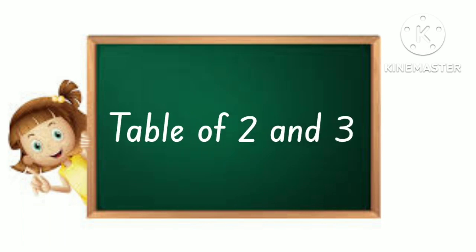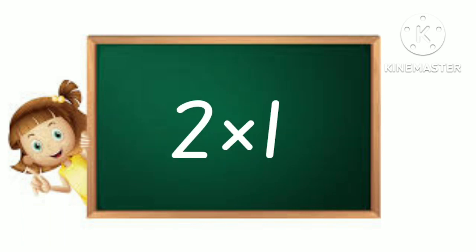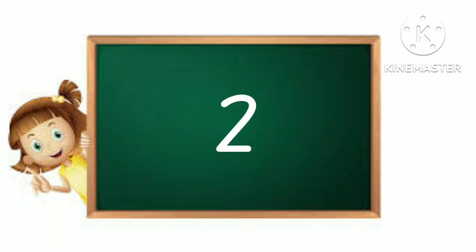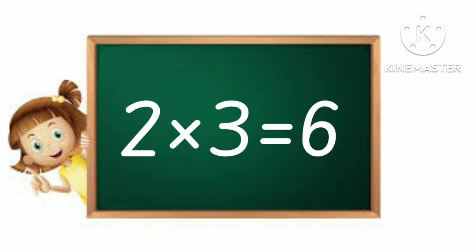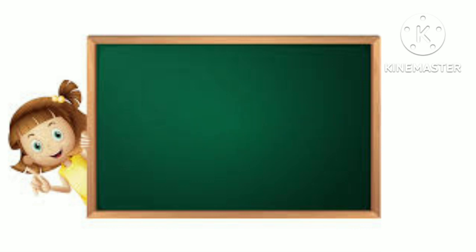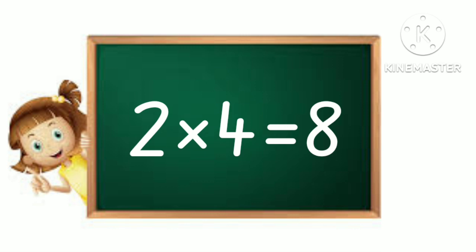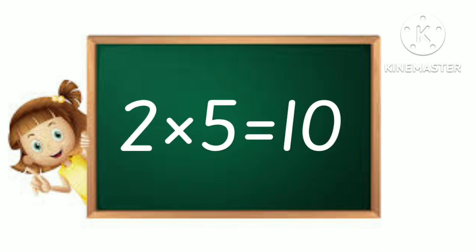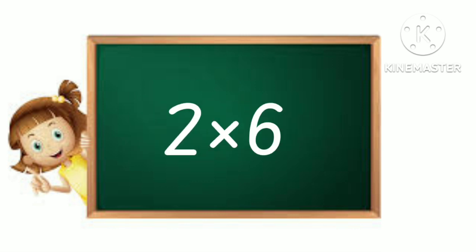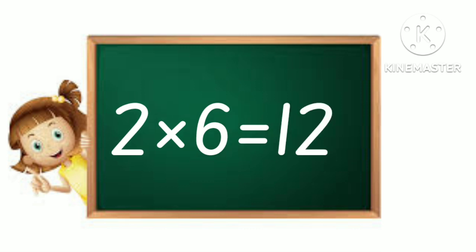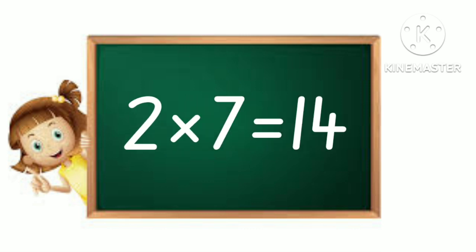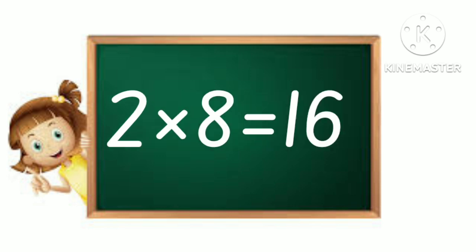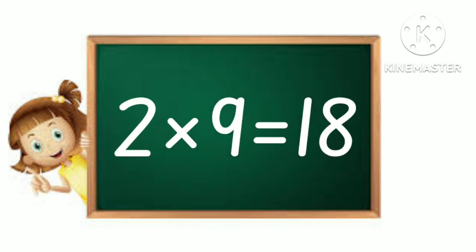Table of 2 and 3. 2 1's are 2, 2 2's are 4, 2 3's are 6, 2 4's are 8, 2 5's are 10, 2 6's are 12, 2 7's are 14, 2 8's are 16, 2 9's are 18.